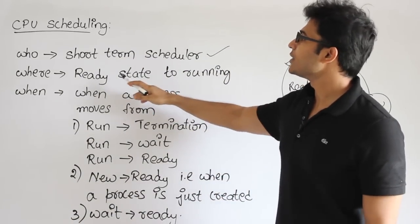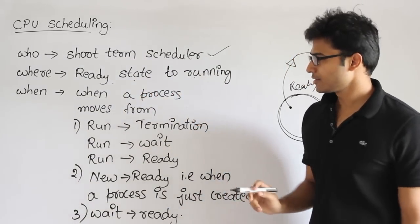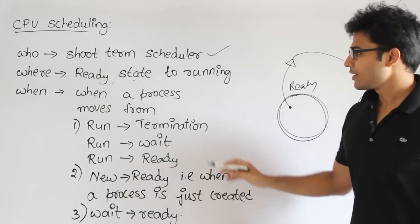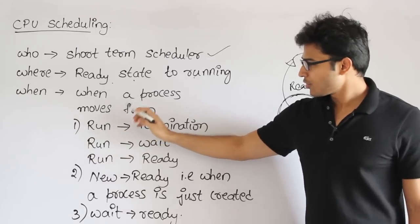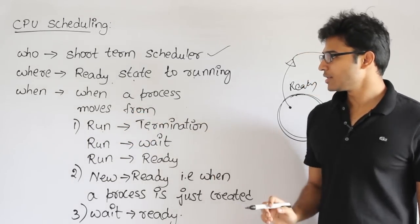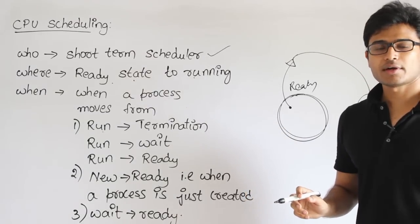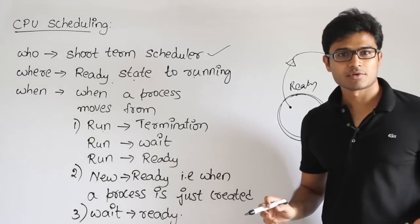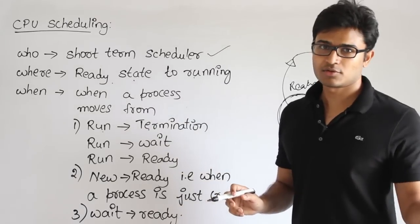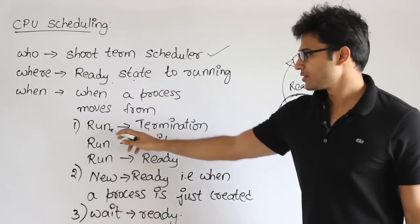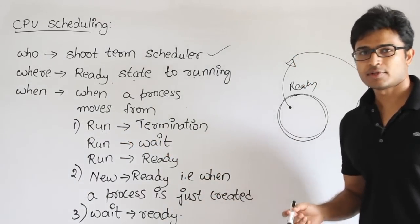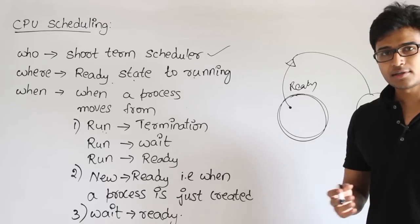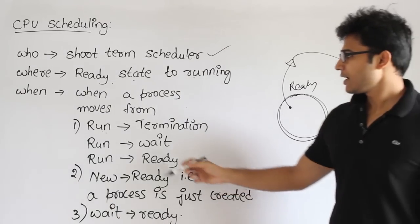When does scheduling happen? There are various cases. Whenever a process moves from running to termination, the process given to the CPU has terminated and no longer needs the CPU. The CPU is now free and can be assigned to another process — this is a natural event that happens frequently.